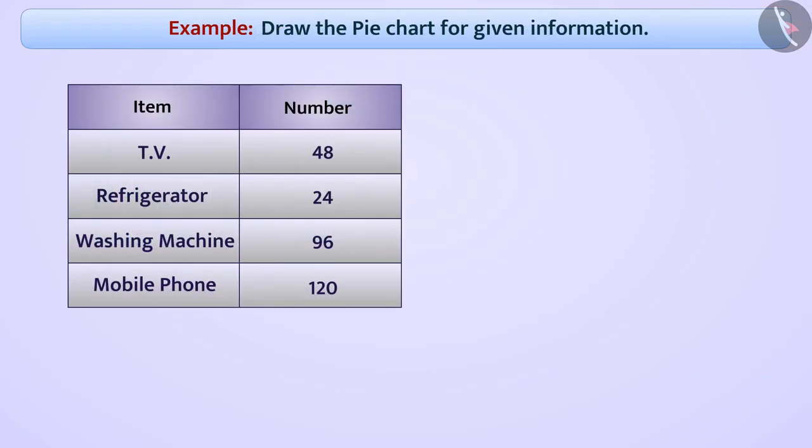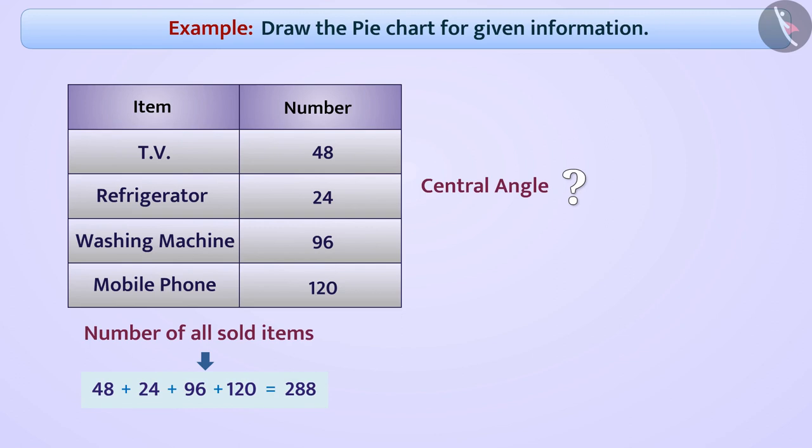We have to find the central angle of sale of each item to draw a pie chart. To find the central angle, we will first add the number of all sold items: 48 plus 24 plus 96 plus 120 equals 288. We will consider this as a whole.